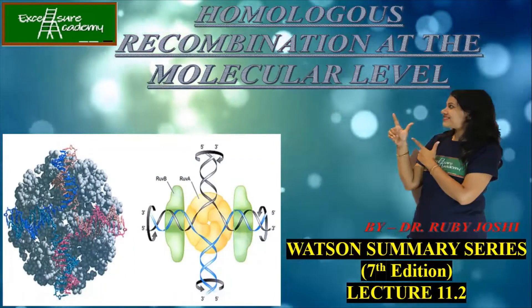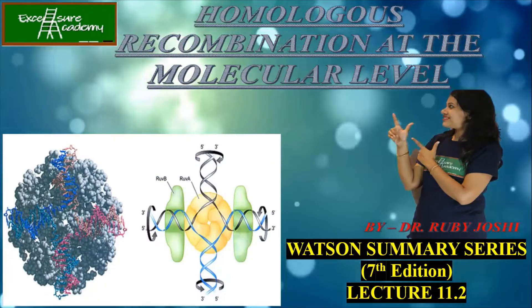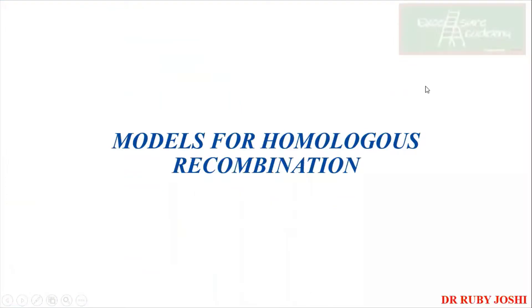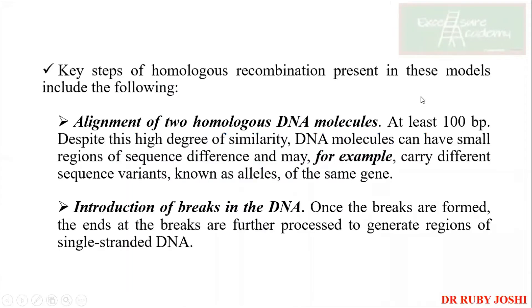Today we are going to do the second lecture of homologous recombination at the molecular level, chapter 11 from the 'What's in Summary' series. We are going to discuss the models for homologous recombination. This is really very interesting, and if you have a good imagination, I guarantee you will never forget this. We're going to learn about Holliday junctions — Holliday is the name of the scientist, spelled H-O-L-L-I-D-A-Y.